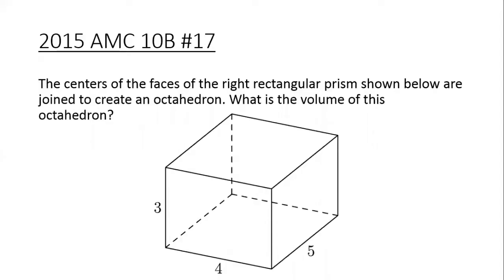Hi everyone, today we will be solving the 2015 AMC 10B problem number 17. The question states that the centers of the faces of the right rectangular prism shown below are joined to create an octahedron. What is the volume of this octahedron?